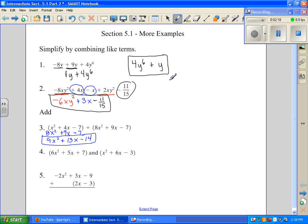Number four, I'm going to do the same thing. I'm just going to line it up underneath it, so that's going to be x squared plus 6x minus 3. Add down, there's a 1 there, so it's going to be 7x squared plus 11x plus 4.